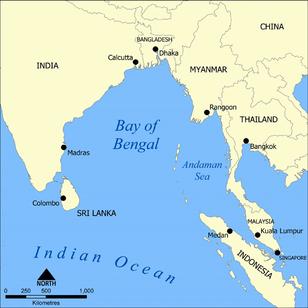The Sundarbans mangrove forest of Bangladesh lies at the delta of the Padma, Jamuna, and Meghna rivers, partly in West Bengal and mostly in Bangladesh. The Brahmaputra, at 2,948 km, is the 28th longest river in the world and originates in Tibet. The Hoogli River, another channel of the Ganga flowing through Calcutta, also drains into the Bay of Bengal. The Padma-Meghna-Jamuna rivers deposit nearly 1,000 million tons of sediment every year, forming the Bengal Delta and Submarine Fan, a vast structure extending from Bangladesh to south of the equator, up to 16.5 km thick.